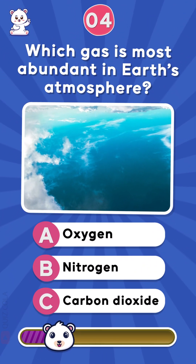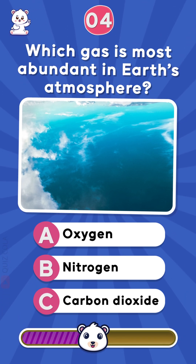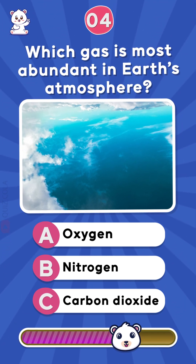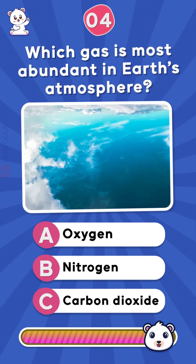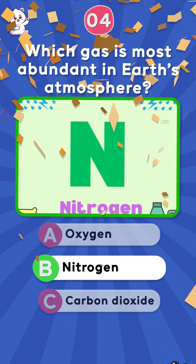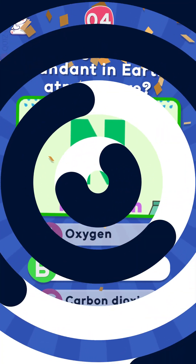Which gas is most abundant in Earth's atmosphere? Oxygen, nitrogen, or carbon dioxide? Excellent! Nitrogen is the most abundant gas.